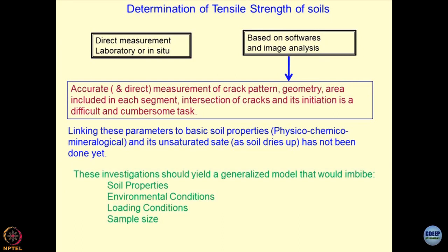A big challenge would be: having all these parameters known — the type of cracking pattern, the geometry the cracks follow, the area included in each segment, the line of intersection of the cracks — can we link all these parameters to the basic soil properties? Our hypothesis is that soils are very intelligent materials — they do not just crack for no reason. The crack pattern is a unique fundamental behavior of a given soil mass, provided the environmental conditions are maintained. Using this hypothesis, we have tried to link these parameters with the physical, chemical, and mineralogical characteristics of the soils and the way the suction profile gets developed in the soil mass. The suction profile develops when the soil dries up and expulsion of moisture occurs because of heating — which is a coupled phenomenon.